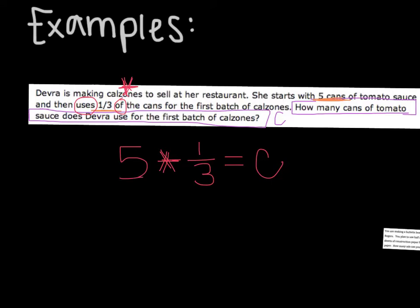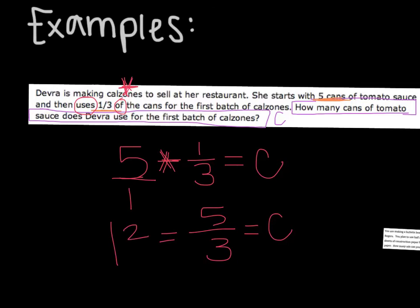So here is my equation. And then I'm going to solve it. So five times one-third is five over one, so five times one is five, and one times three is three. So five-thirds is how many cans. Which, if we turn it into a mixed number, that would be one and two-thirds. So Debra used one and two-thirds cans in the first batch.